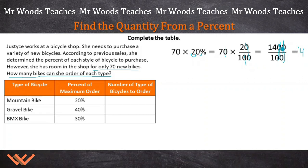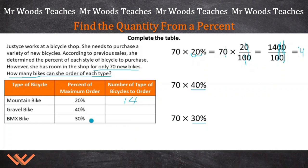And we can fill in our table right here for mountain bikes — it's going to be 14. Pause the video to see if you can set up the equations to determine the number of bicycles that Justice needs to order. Welcome back. Let's see how we can set up the other equations. As you can see, it's just changing the second number right here. So we have 40% for the gravel bikes, and 30% for the BMX bikes. Now, what's the next step? The next step is to take it out to 40 hundredths and 30 hundredths for this equation here.